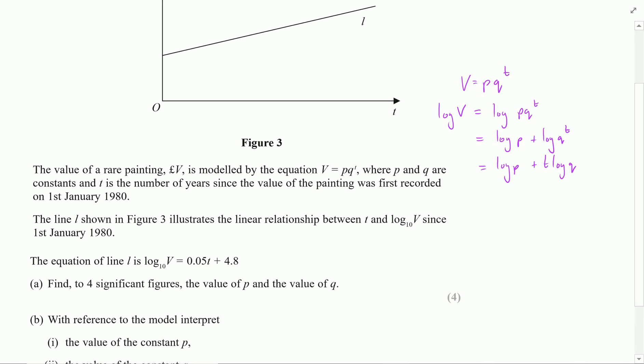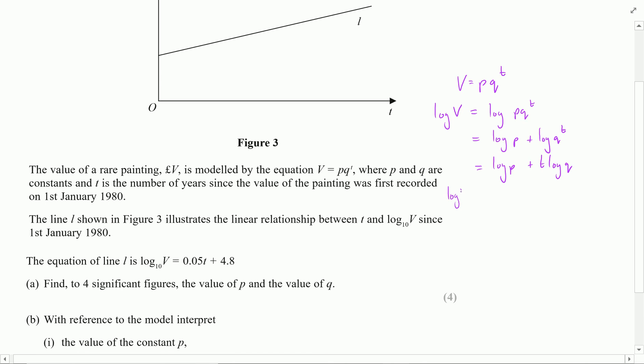Now if I compare this to the original, which was to say that log V is equal to 0.5t—so let's write that at the end as t times 0.05—and I can say that this bit here is going to be 4.8, I can then compare the coefficients in both equations.